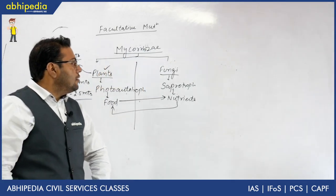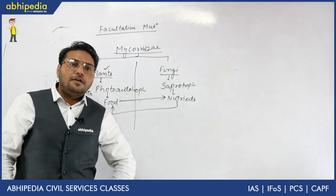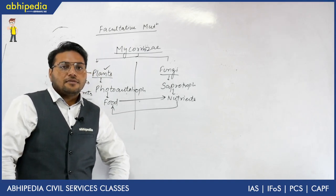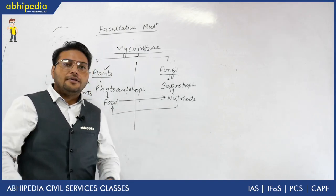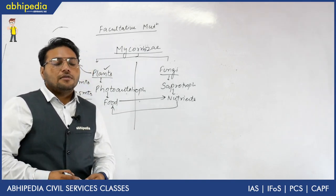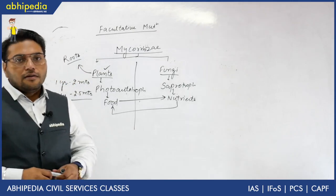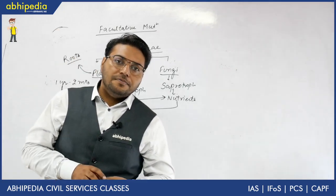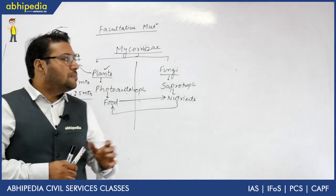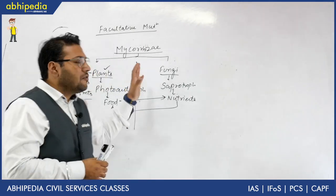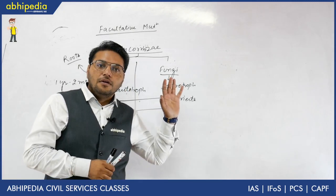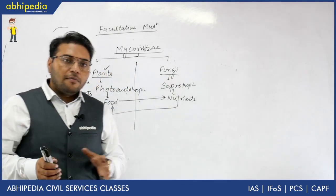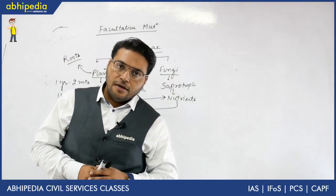So this is the concept of facultative mutualism as well as obligative mutualism. Facultative mutualism — the example is mycorrhiza. 90% of plants have this particular relation of mycorrhiza. I hope that you understand mutualism.